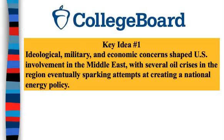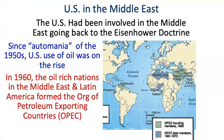Our first key idea says ideological, military, and economic concerns shaped U.S. involvement in the Middle East, with several oil crises in the region eventually sparking attempts at creating a national energy policy. The United States' involvement in the Middle East goes all the way back to the Eisenhower Doctrine, which essentially said the U.S. was going to protect the Middle East from communist expansion. In the 1960s, the oil-rich nations of the Middle East and Latin America formed the Organization of Petroleum Exporting Countries, otherwise known as OPEC.